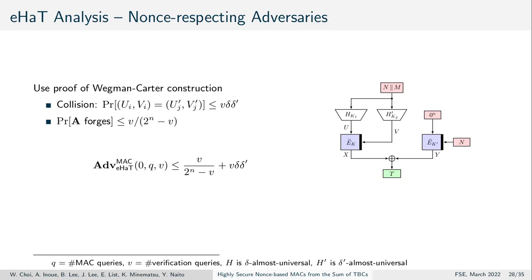And derived bounds that upper bounded the probability that A forges and the probability of a simultaneous collision in both hashes.